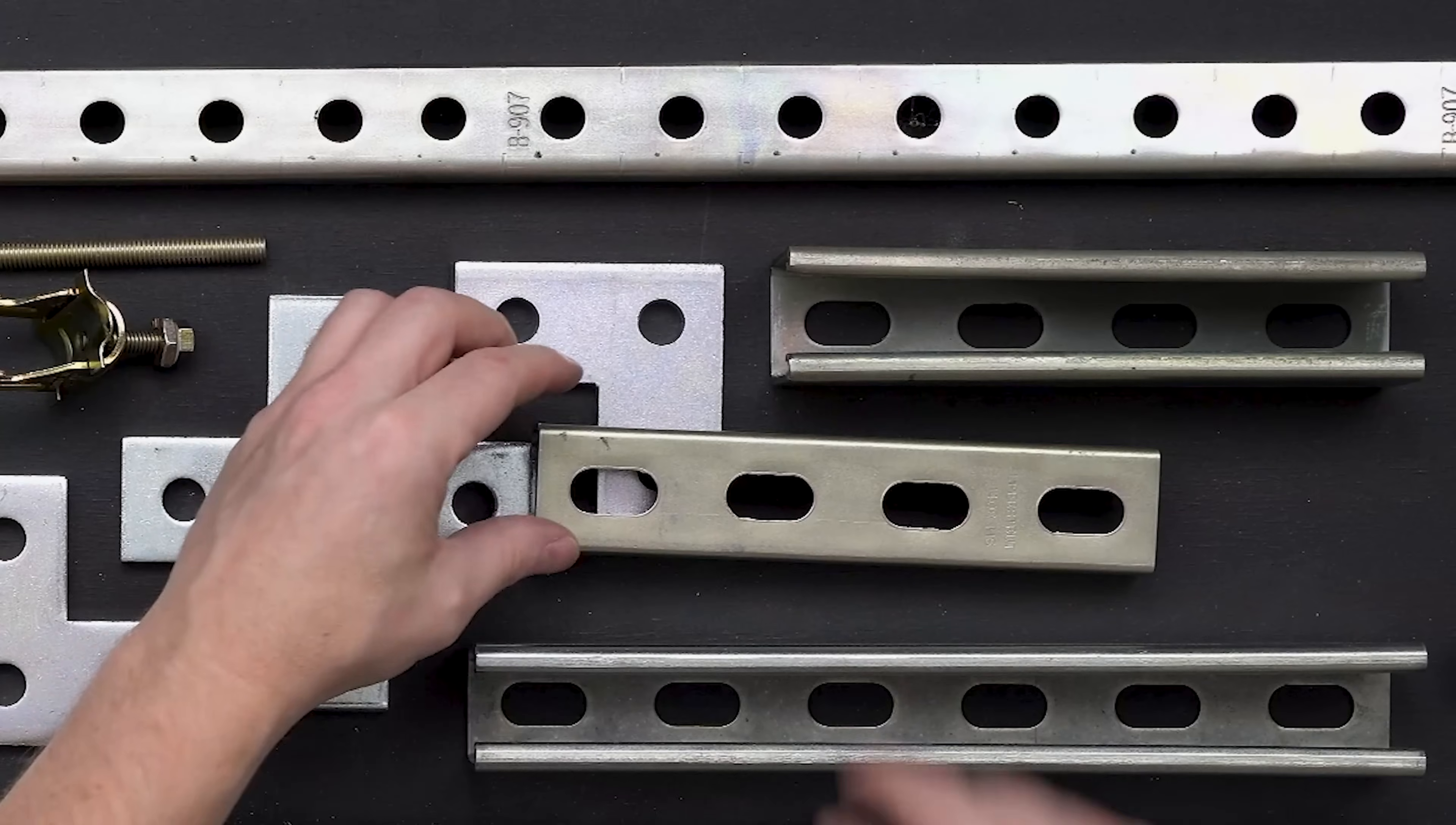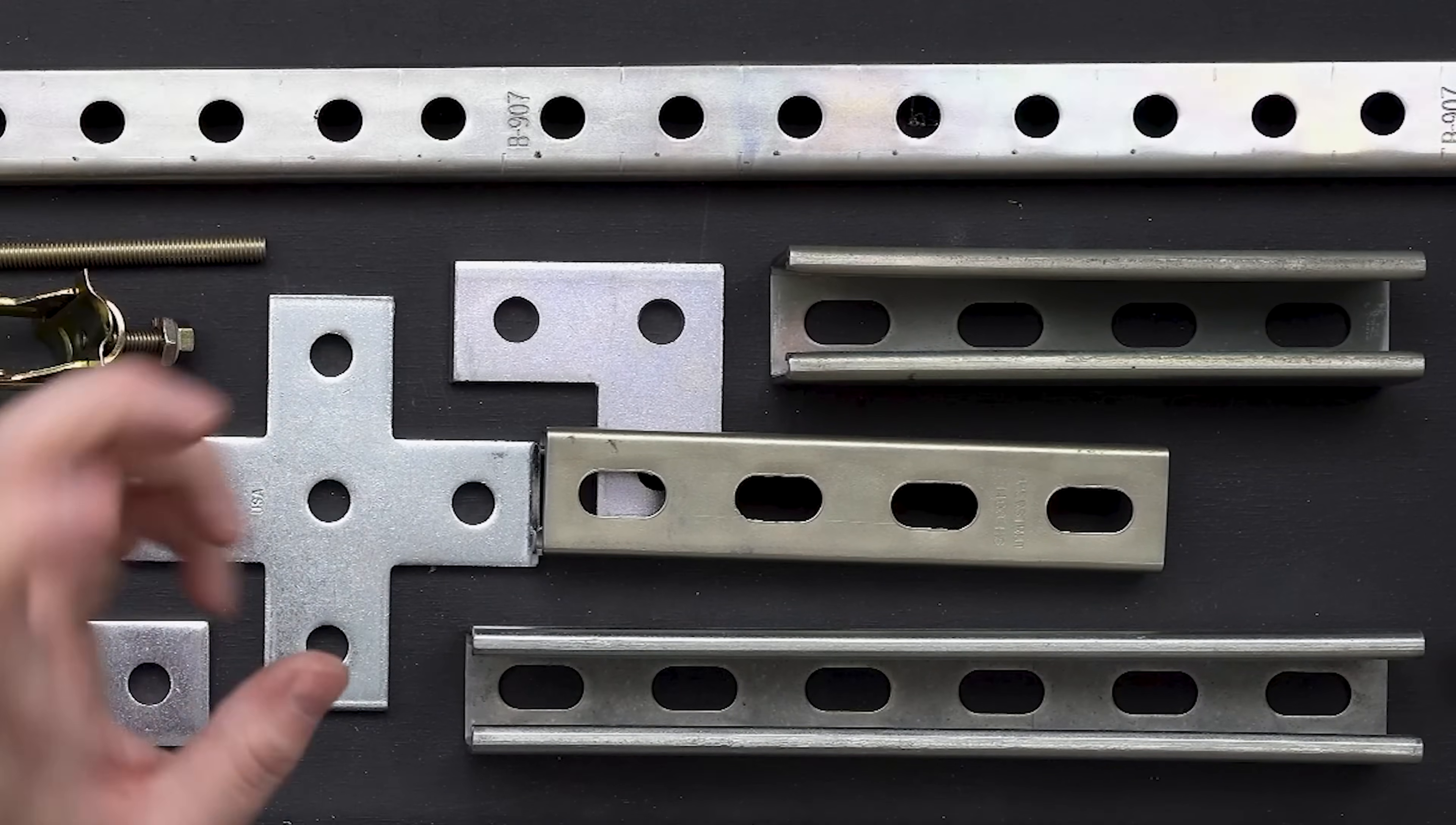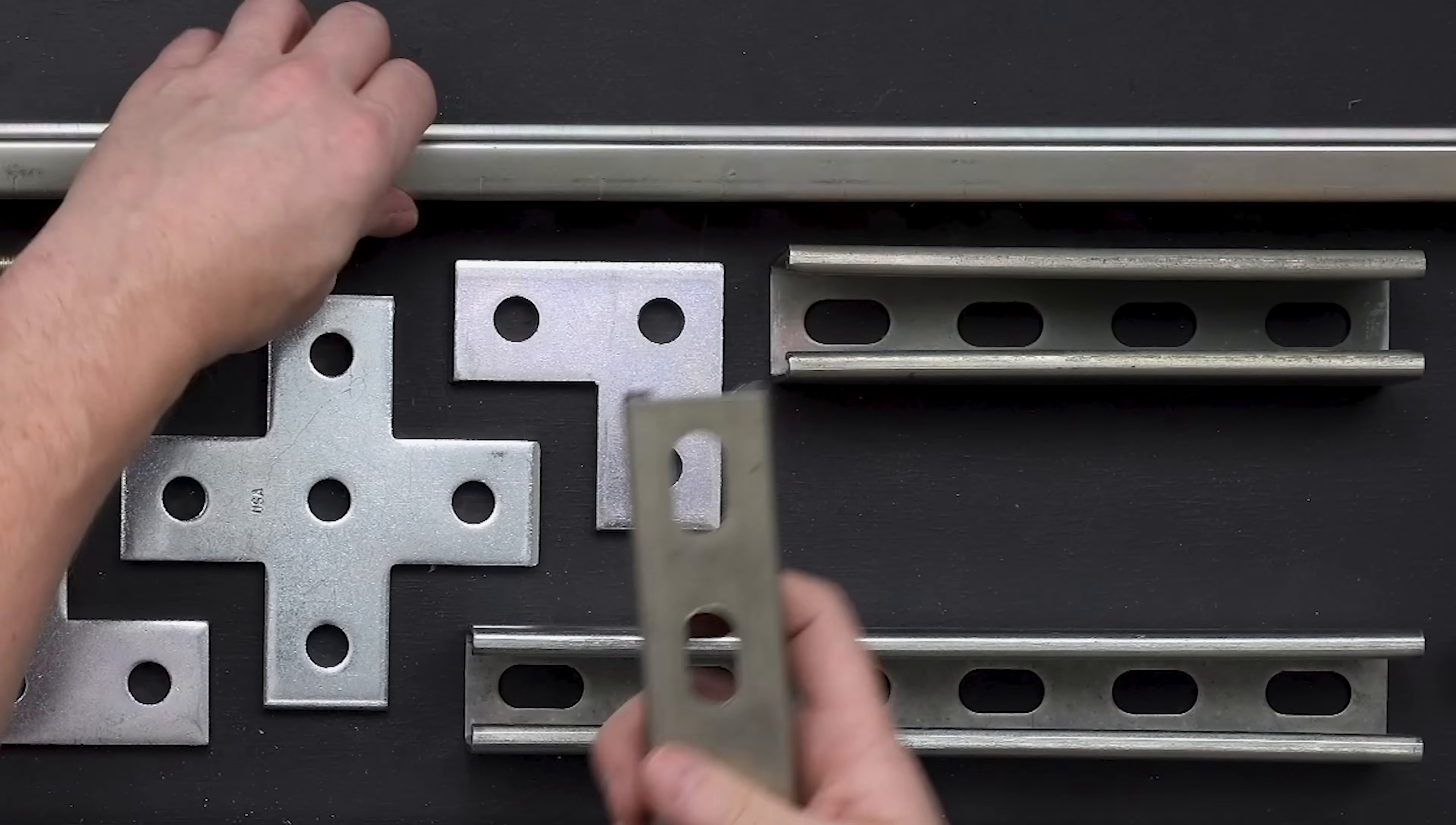The other thing too, is the thickness of this strut is an inch and five eighths. It doesn't matter if it's the thick stuff like this, you're looking at an inch and five eighths for the width. With Kindorf, you're looking at an inch and a half for the width. So it does change a little bit. The thickness of it is different too. So if you look at the thickness of slotted strut, you've got a seven eighths thickness. And on here, you've got three quarter inch thickness for the Kindorf. So they are a little bit different.